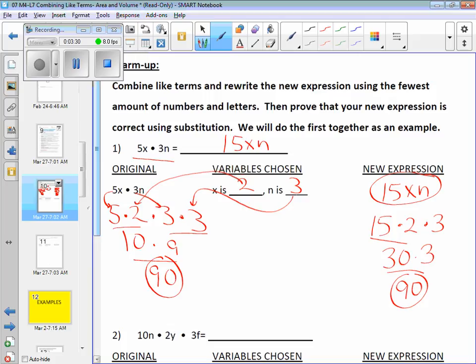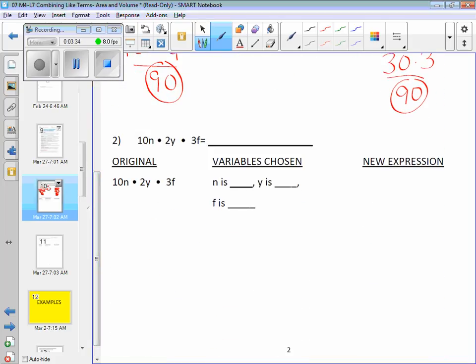Okay? Let's try another one together. Now you need three variables. First, combine like terms. And you know what? To be safe and to make things easier on ourselves, keep the letters in the order in which they appear. Do not alphabetize them. Torney, do you want to try it? Multiply your coefficients or numbers first. What do you get? Pretty good. That takes care of 10, 2, and 3. And now what? Pretty good. 60 nyf.